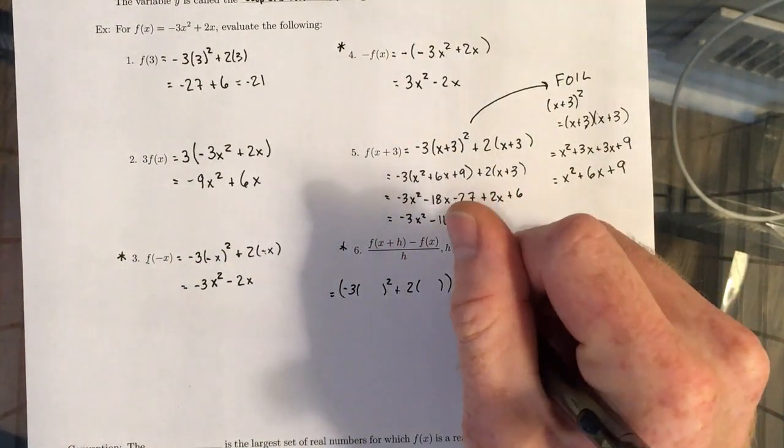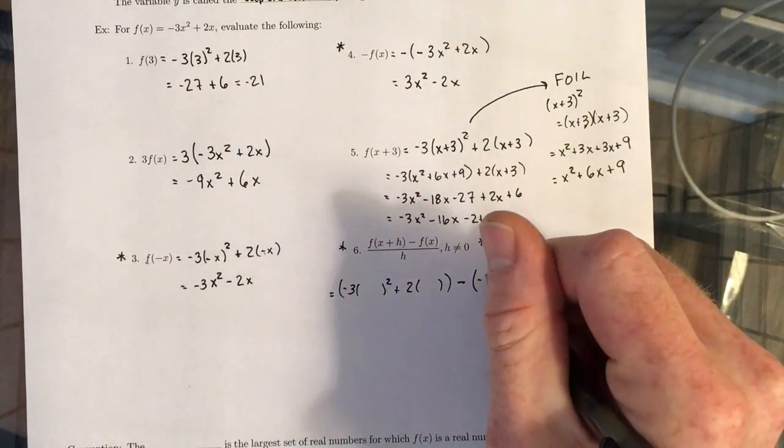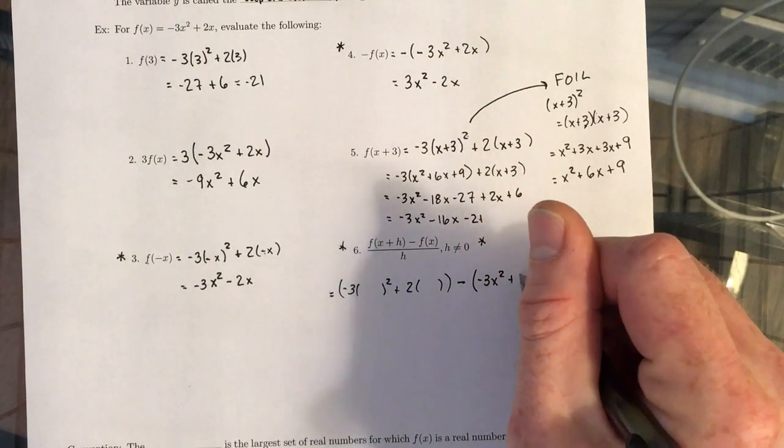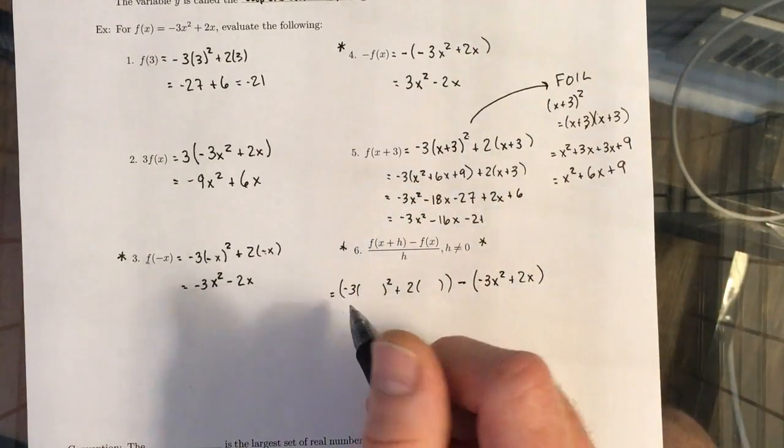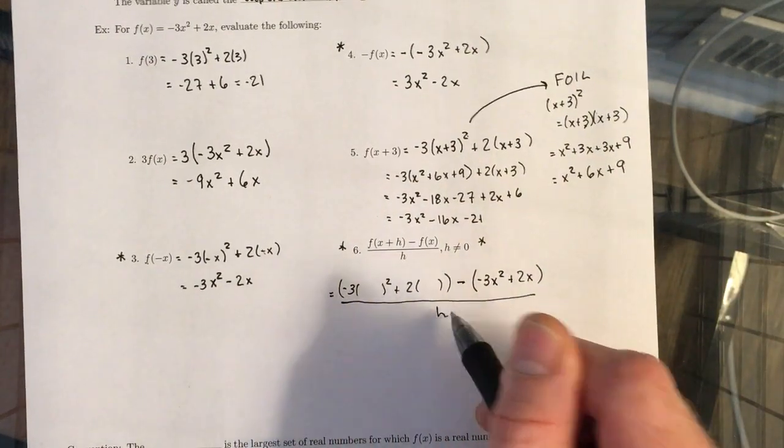And that is F of X plus H. Next, we have minus and then just F of X. So we can take that expression right here, plug it in. And that's all divided by H.